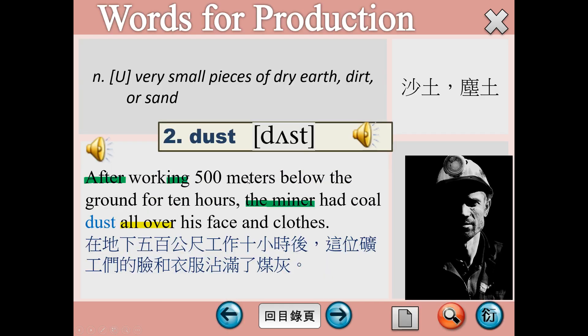Number 2，dust，指的是塵土、沙土。After working 500 meters below the ground for 10 hours, the miner had coal dust all over his face and clothes.